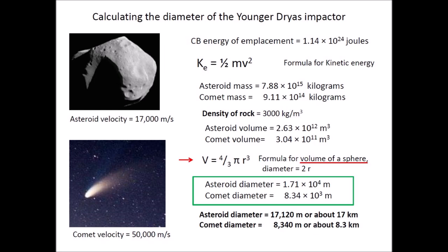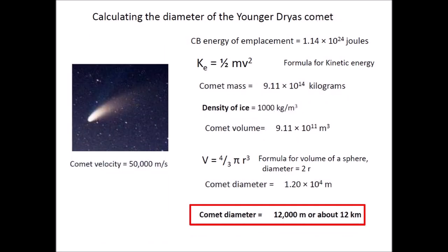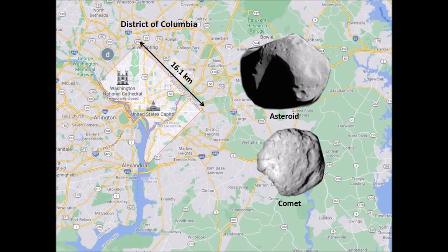Note that for these calculations we have assumed that the impactor had the density of rock. The final result is astounding. According to these calculations, the extraterrestrial impactor that created the Carolina Bays was an asteroid with a diameter of 17 kilometers traveling at 17,000 meters per second, or a comet with a diameter of 8.3 kilometers traveling at 50,000 meters per second. The asteroid would be about the size of Washington DC. Comets are icy bodies which are less dense than rocky asteroids. Using the density of ice of approximately 1,000 kilograms per cubic meter, we calculate a bigger volume and a diameter of 12 kilometers for the comet. It is amazing that such relatively small extraterrestrial objects can have such a profound effect on life when they collide with the Earth.